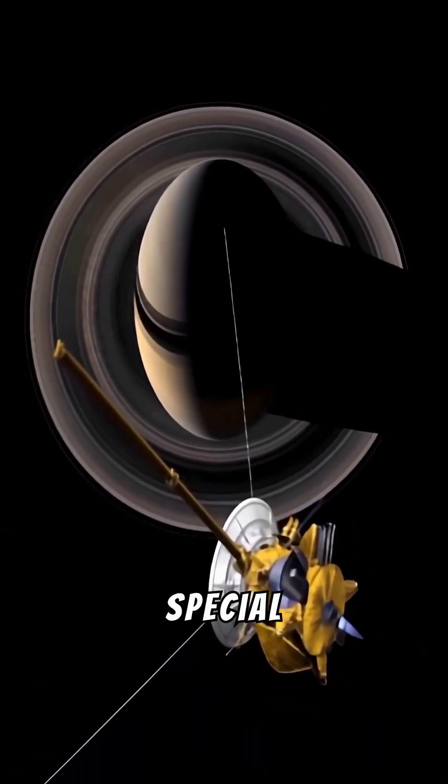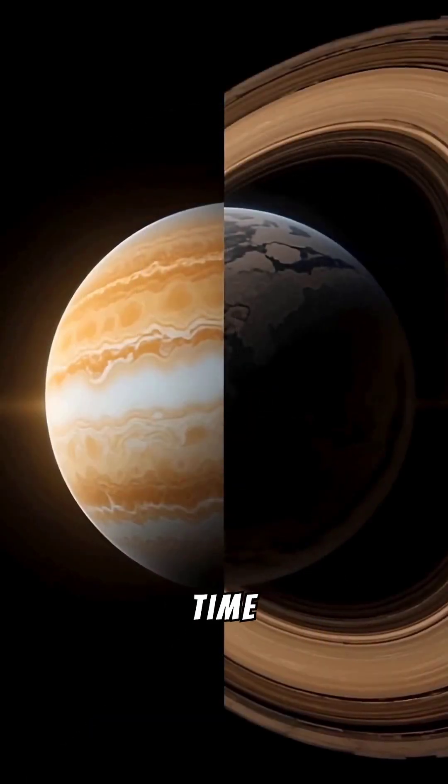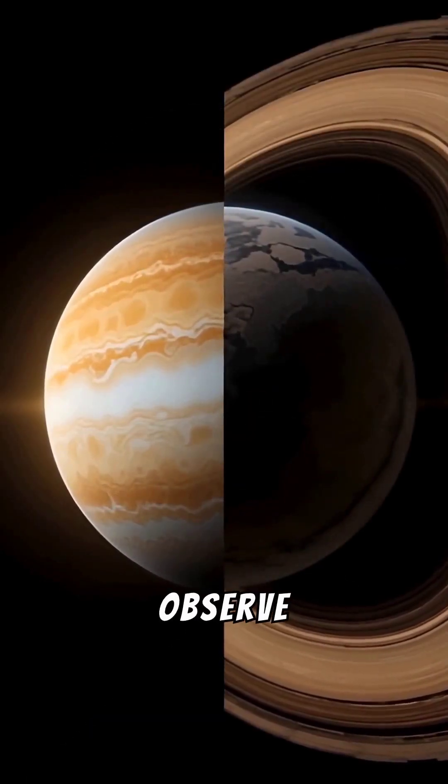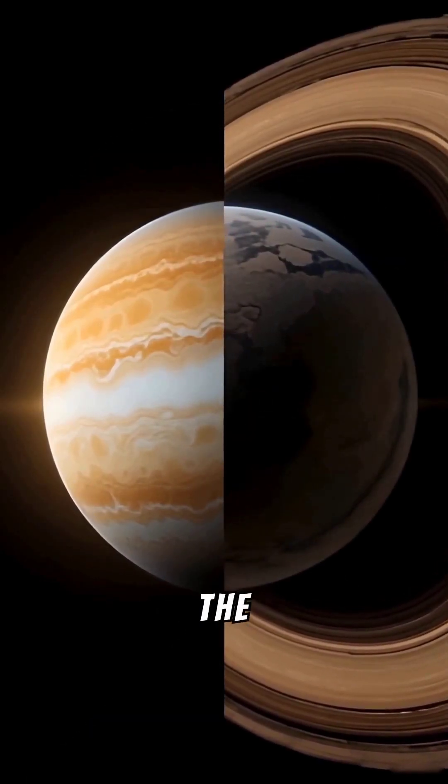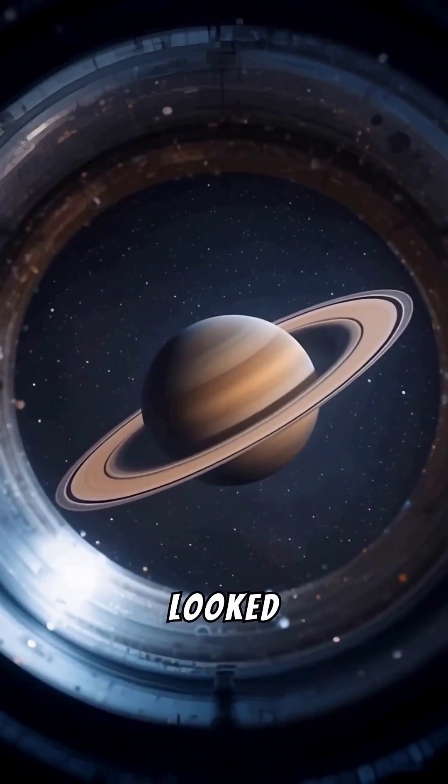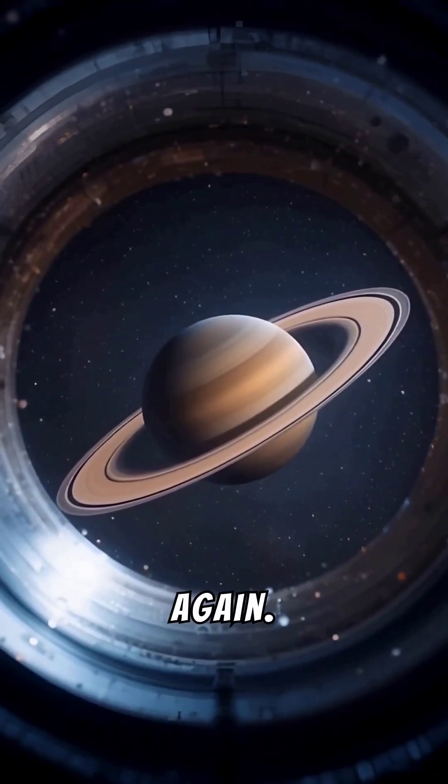This means we're living in a special era, a window of time in which the rings exist and we can observe them. In the past, Saturn may have looked very different, and in the future it will change again.